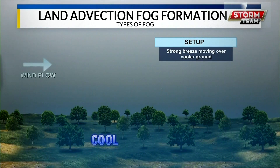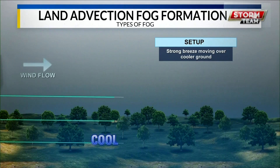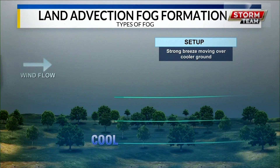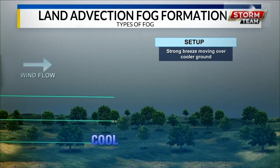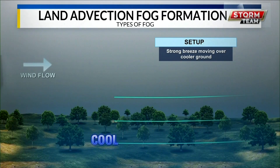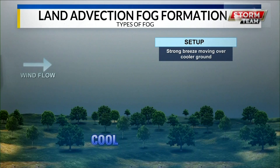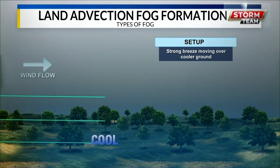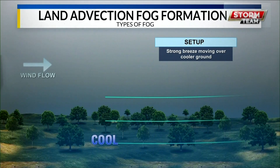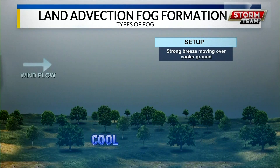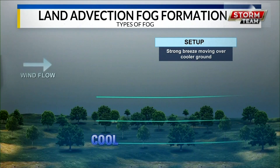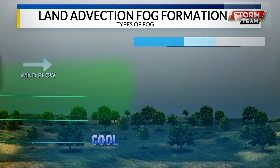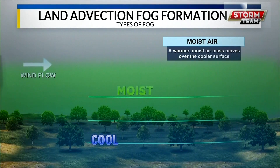I'm going to step out as usual. Let's first talk about the setup: strong, breezy wind moving over cooler ground. That's where you get those breezy conditions. For example, a cold front comes rolling in — that cooler air moves along the surface in the wind flow.